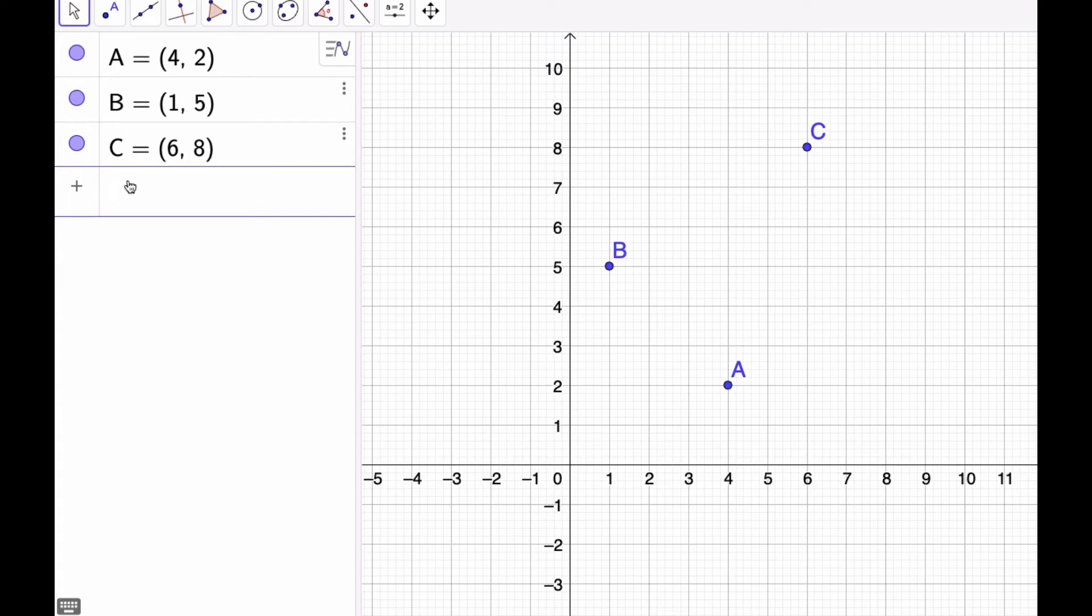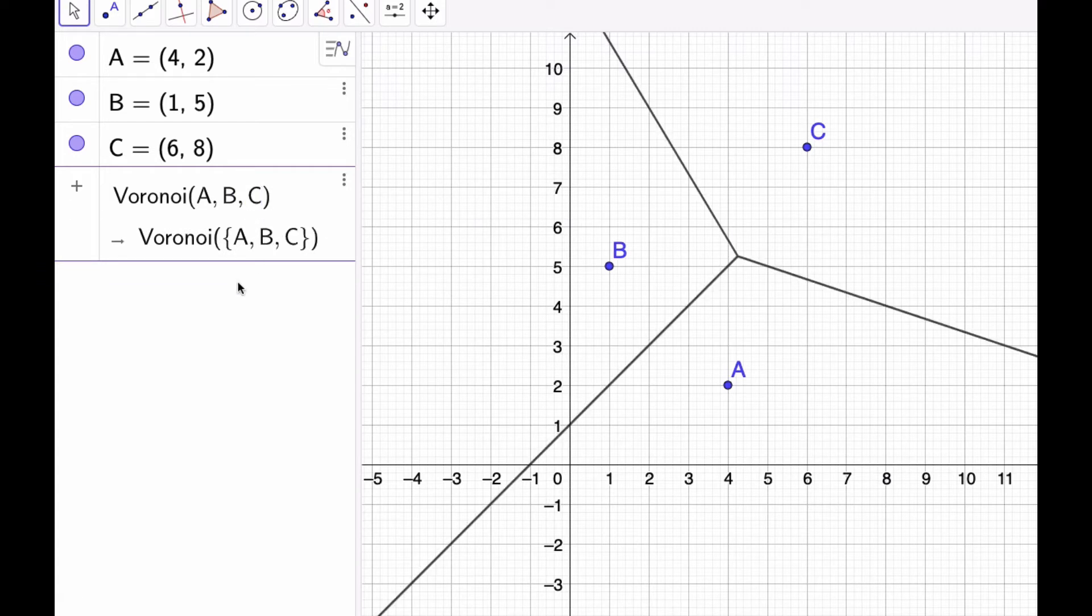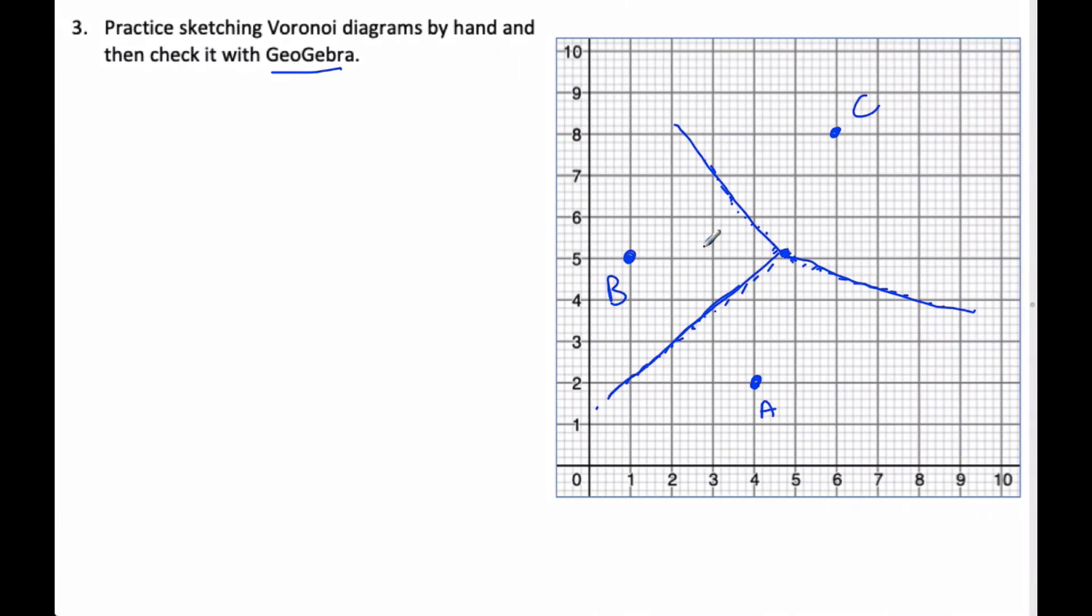Okay, and so then all I do is I go Voronoi, and it pops up as a command, I click on it, and I have to replace list of points with A comma B comma C. And it magically makes the Voronoi diagram. And if I look at that, look at mine, I feel like it's the same thing.